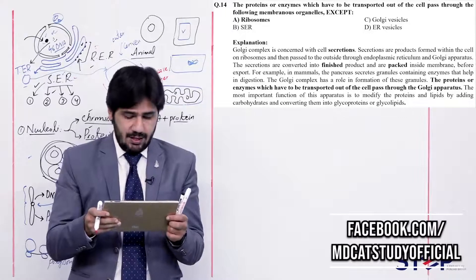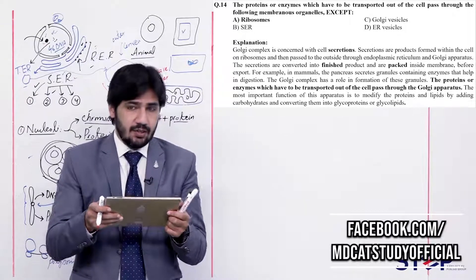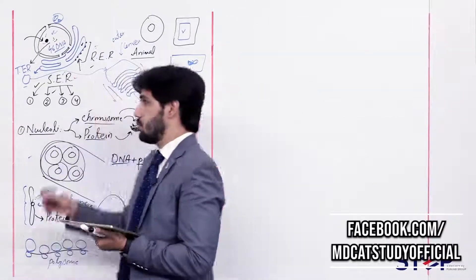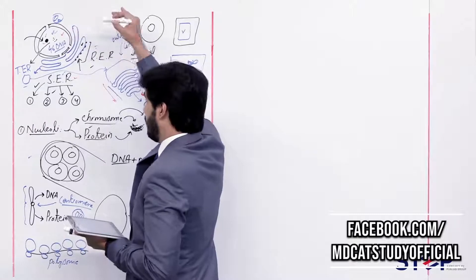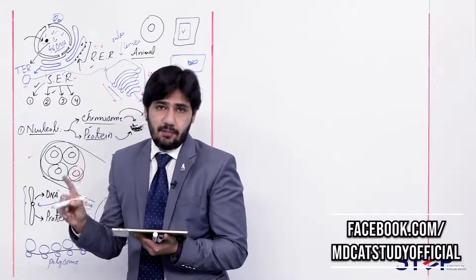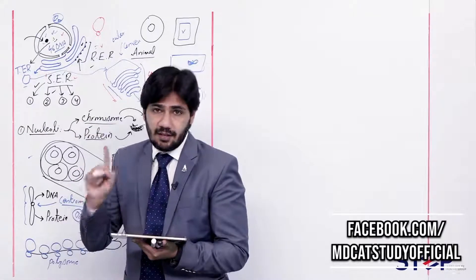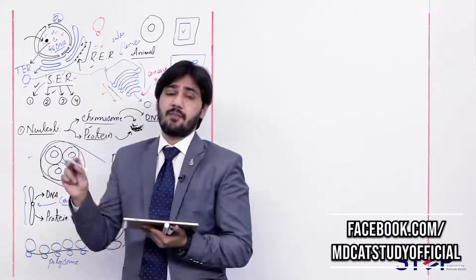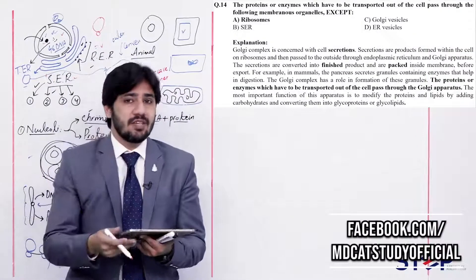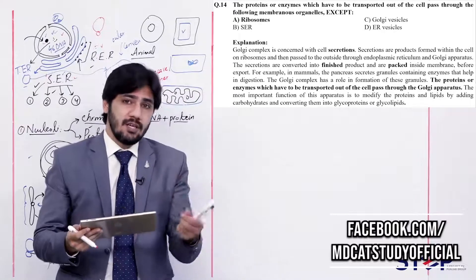Question 14: Proteins or enzymes transported out of the cell pass through the following membranous organelles except — (alpha) ribosomes, (beta) SER, (charlie) Golgi vesicles, (delta) ER vesicles. In the secretion pathway, the order is: nucleus gives the order, RER/SER synthesizes the protein, it passes through the endoplasmic reticulum membrane, moves to Golgi apparatus where it is modified and packed, then released and fused with plasma membrane. Ribosomes are not membrane-bound, so proteins do not pass through a ribosome membrane. The right answer is alpha — ribosomes.